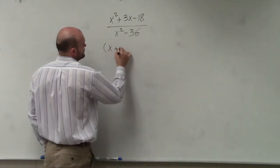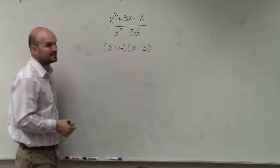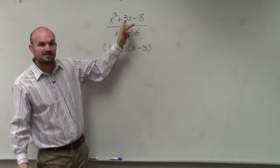Well, I can determine that that factored form is going to be this. Because I can verify 6 times negative 3 is negative 18, and 6 plus negative 3 is positive 3.